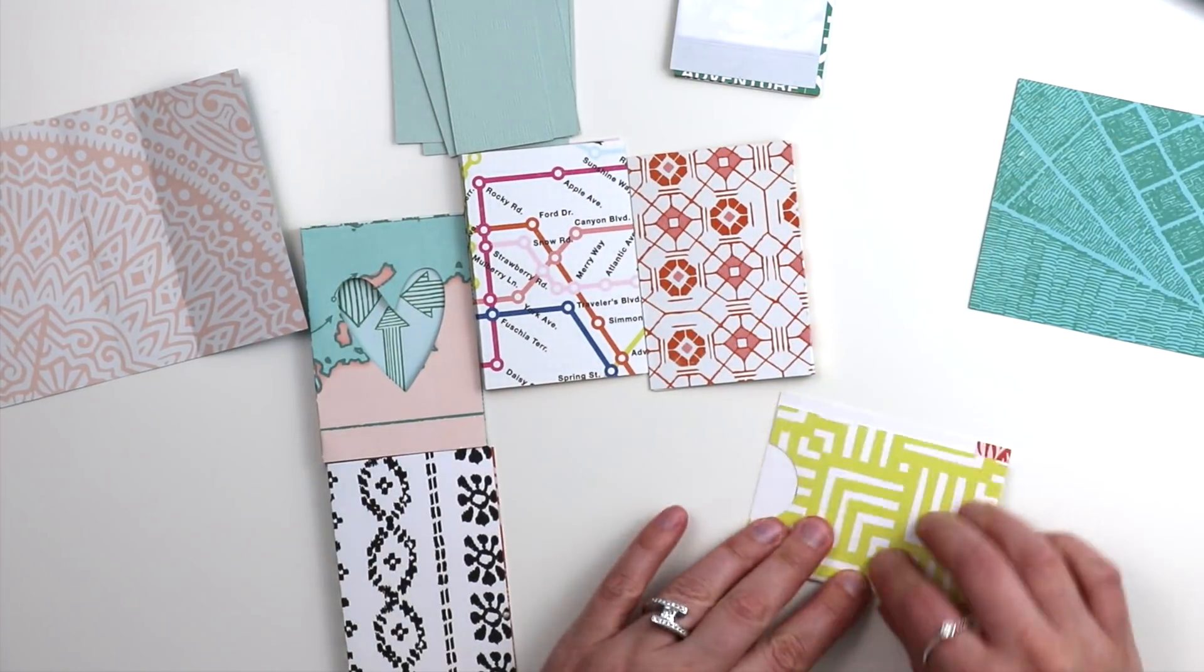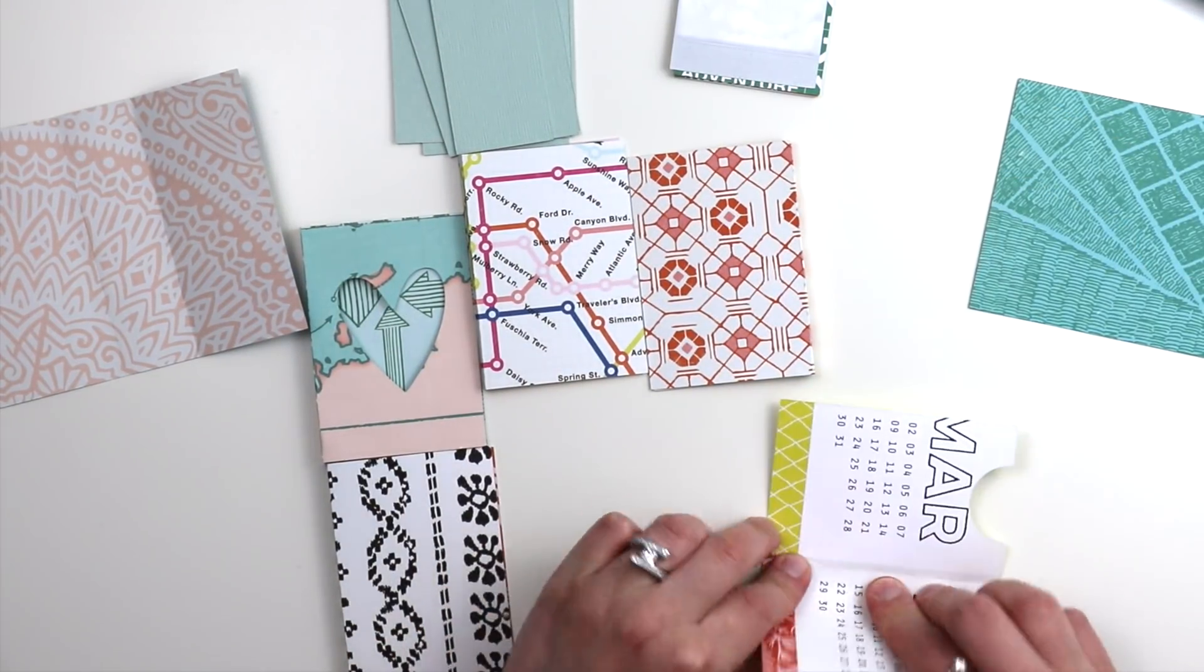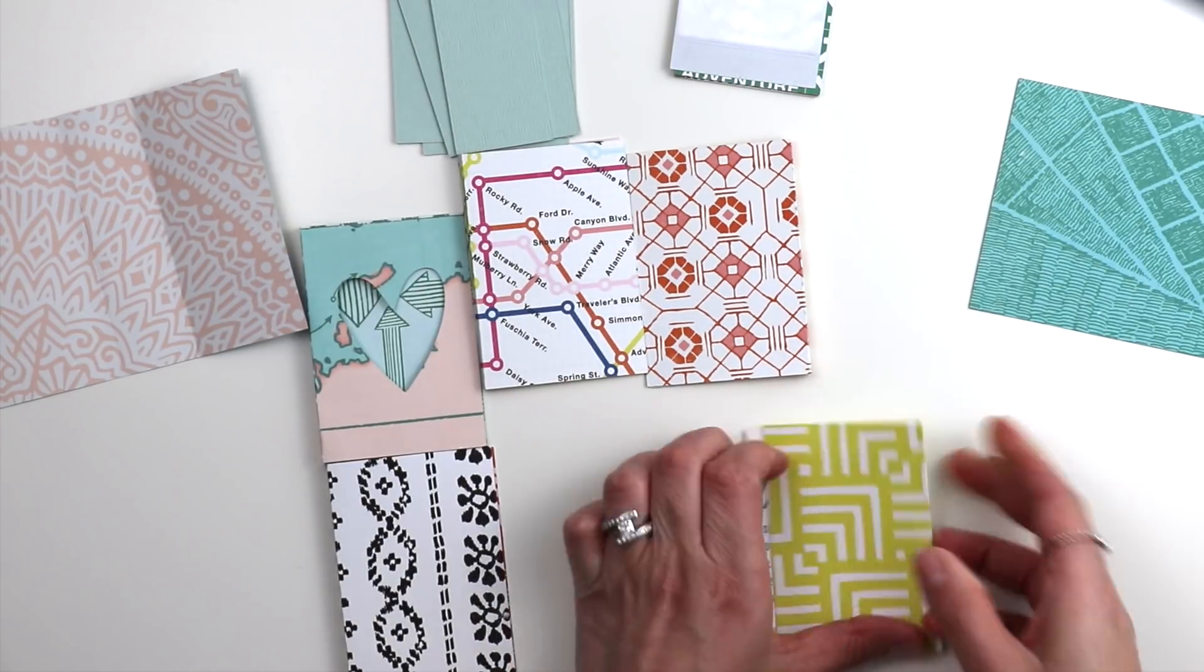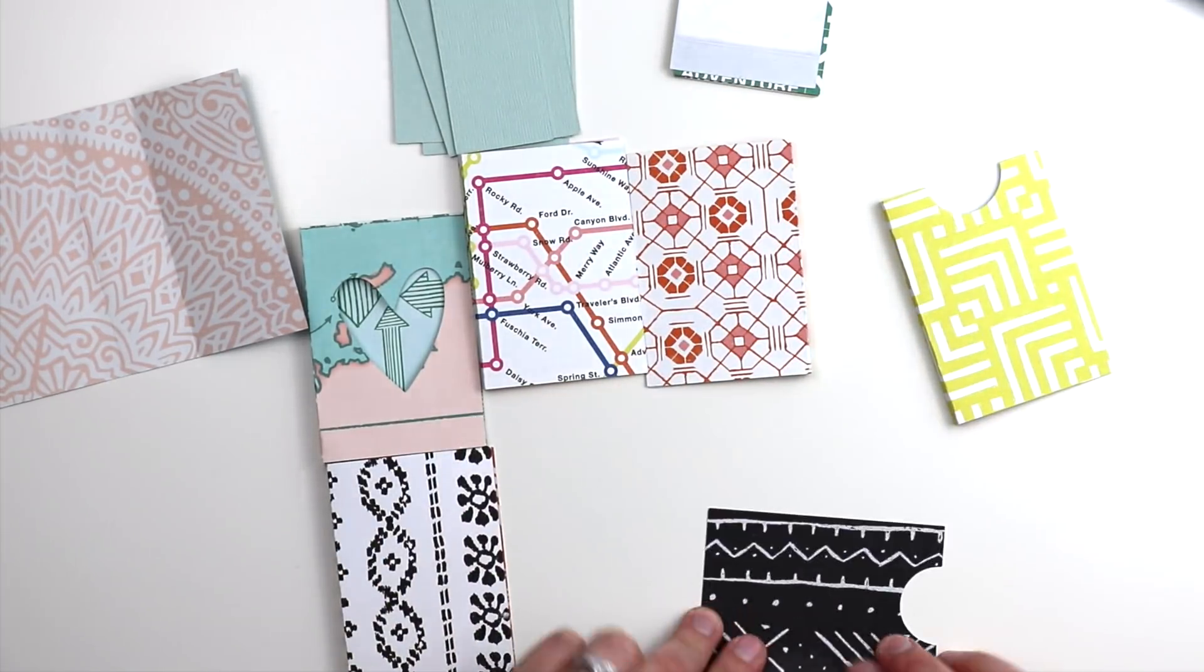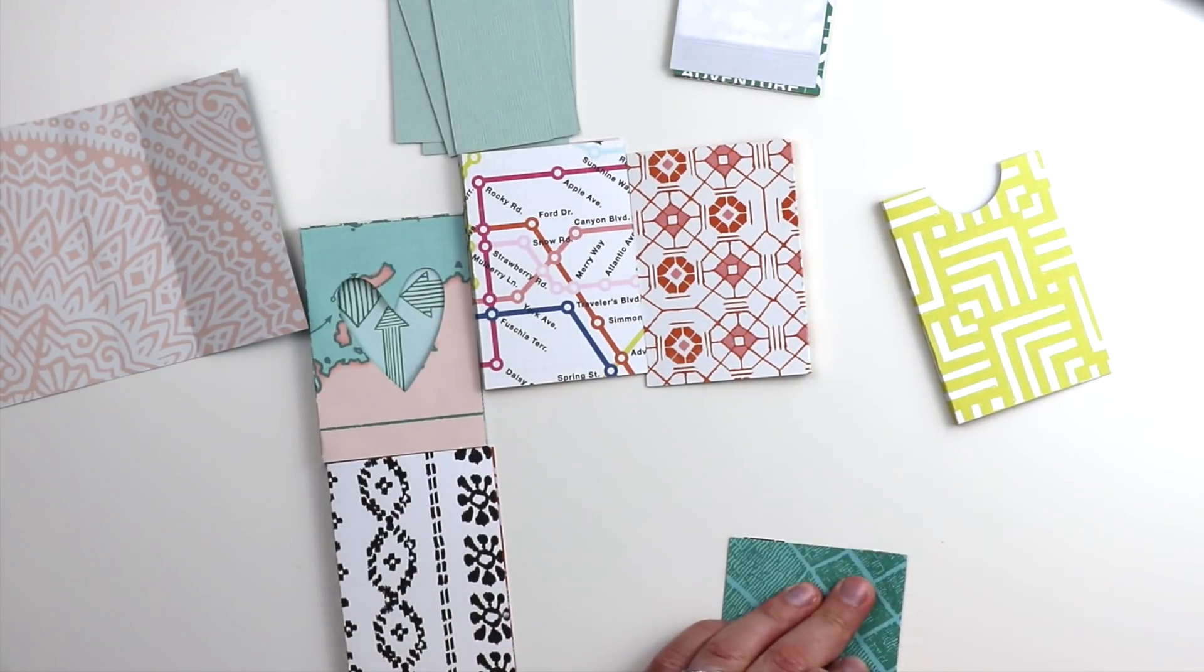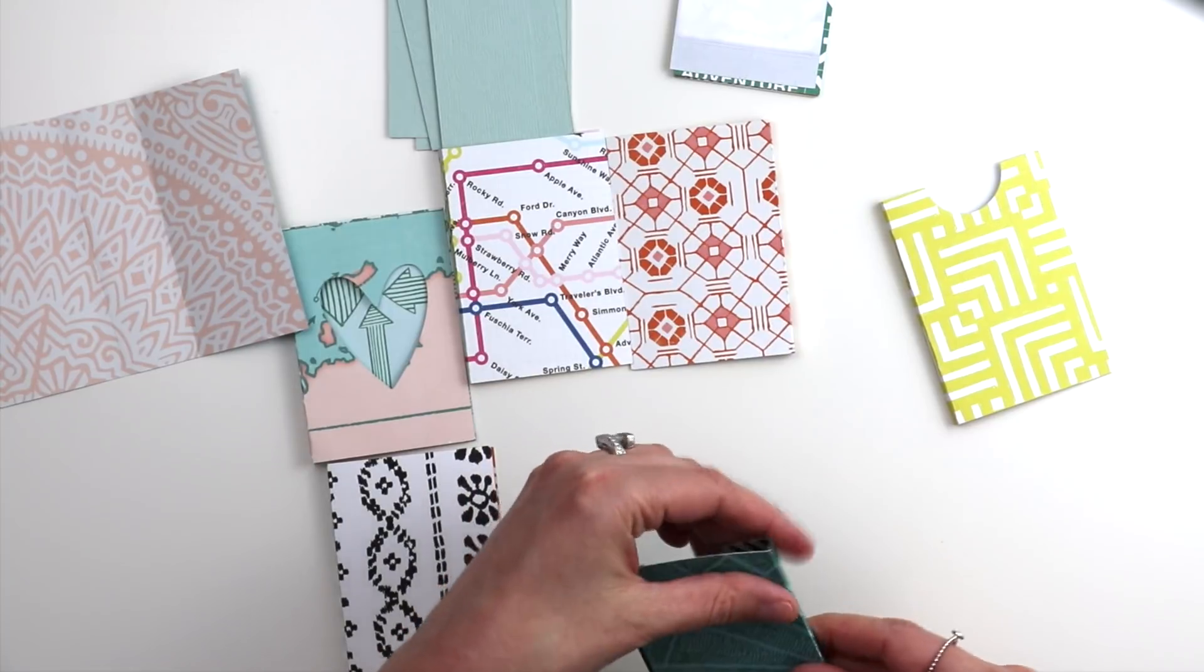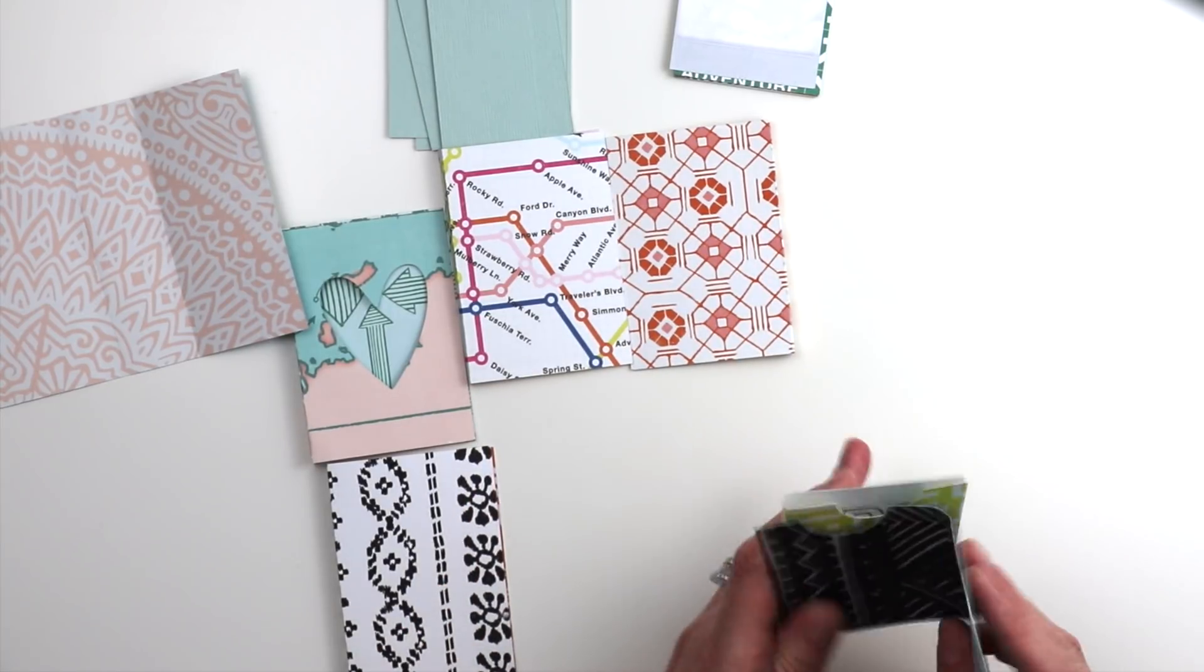I'm just using my fingernails to score on these lines and crease it. Perhaps if you used a bone folder that might make the creases a little bit cleaner, a little bit nicer. Fingernails work pretty well too. Here's the two notched pages that I was talking about and these will go back to back.